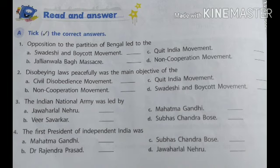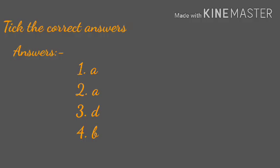Fourth point: The first President of India was... Options are: A. Mahatma Gandhi, B. Dr. Rajendra Prasad, C. Subhash Chandra Bose, D. Jawaharlal Nehru. And the answer is B. Dr. Rajendra Prasad. Children, you can check your answers from here.